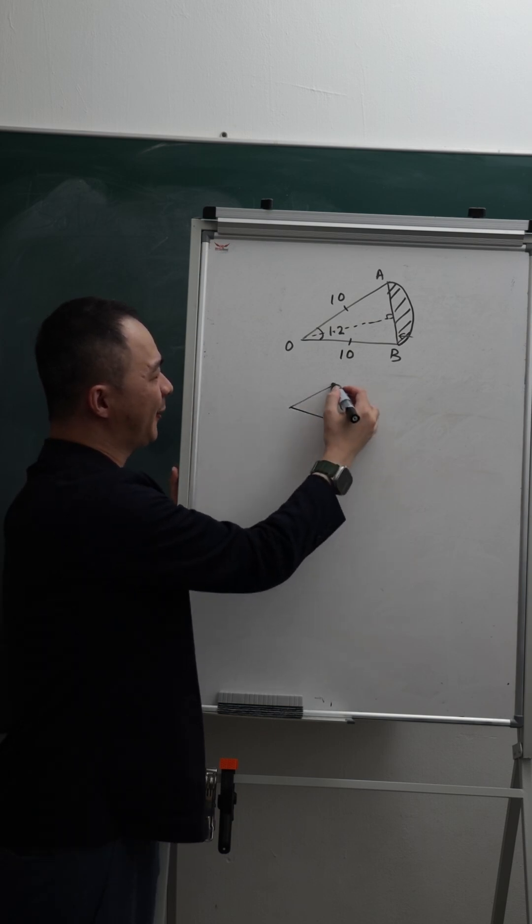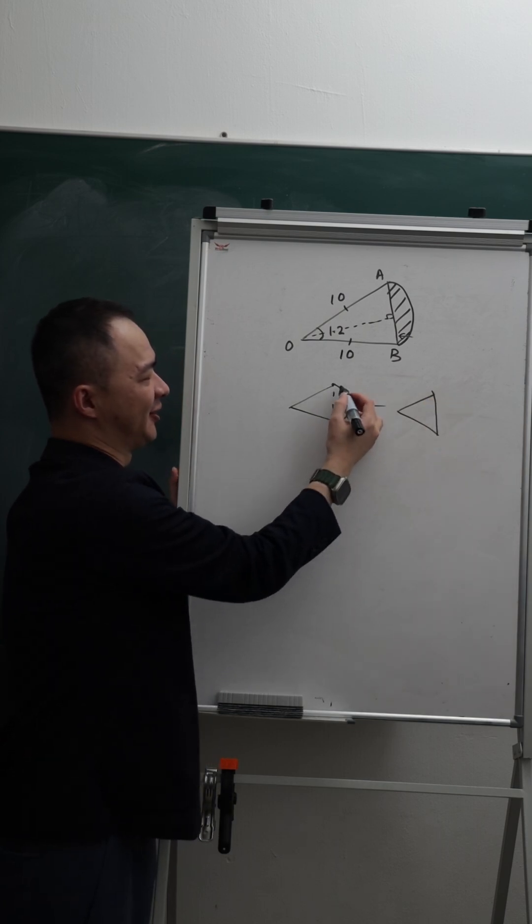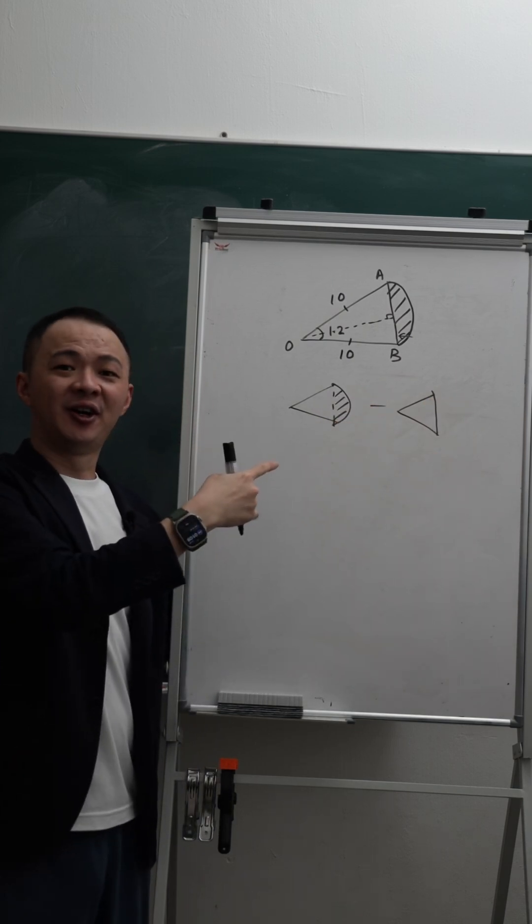You will find the area of sector, and then you minus area of triangle, and then eventually you will get the area of the shaded region.